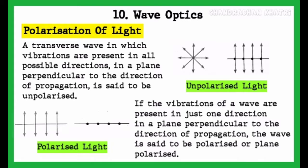Polarization of light: a transverse wave in which vibrations are present in all possible directions in a plane perpendicular to the direction of propagation is said to be unpolarized light.